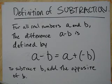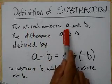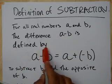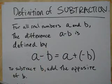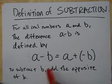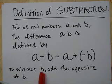Let's talk about the definition of subtraction. For all real numbers a and b, the difference a minus b is defined by a minus b equals a plus the opposite of b. So to subtract b, you can simply add the opposite of b.